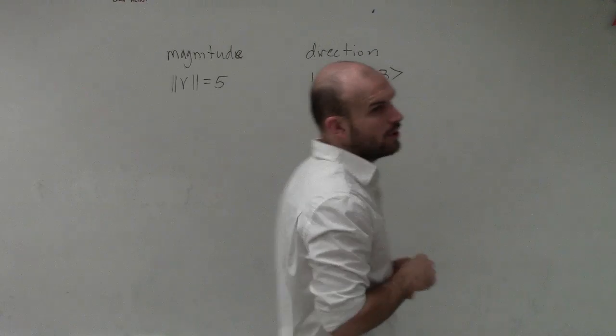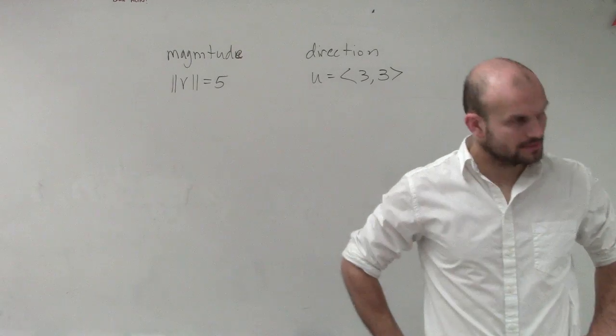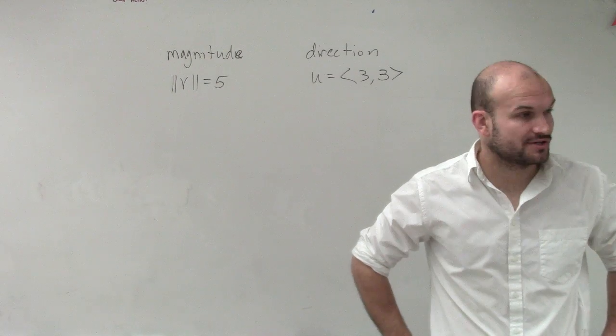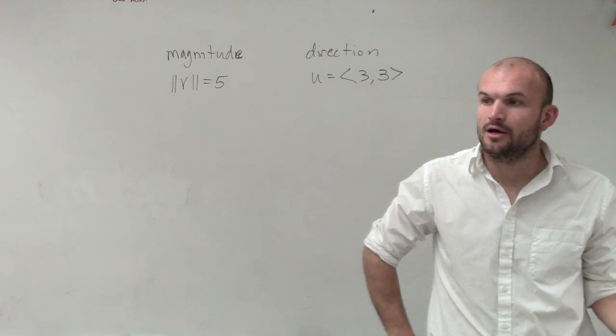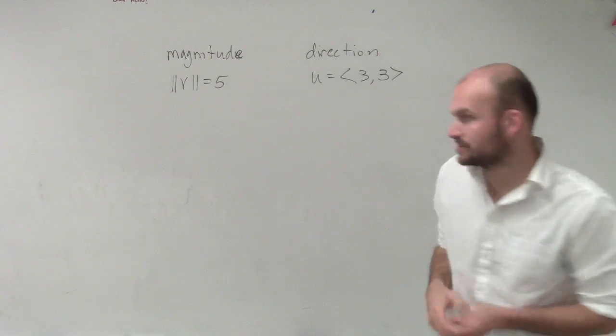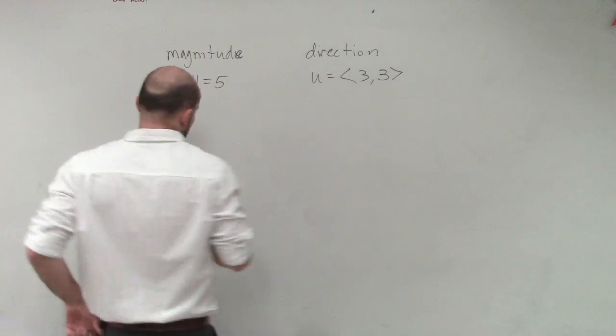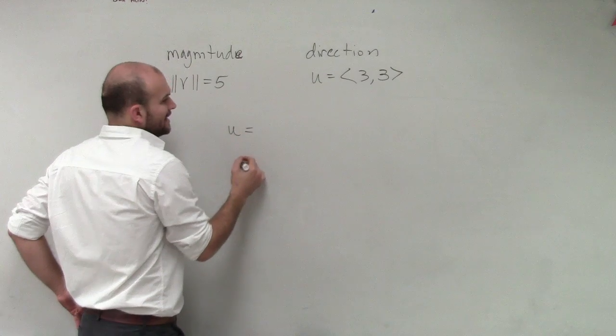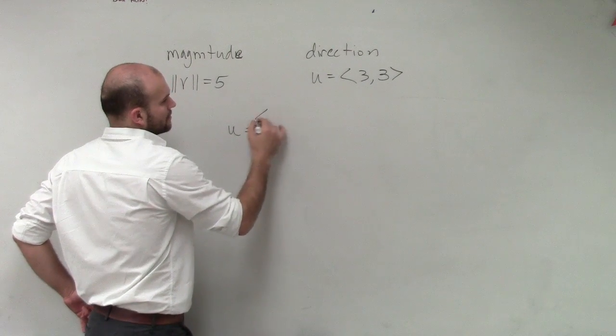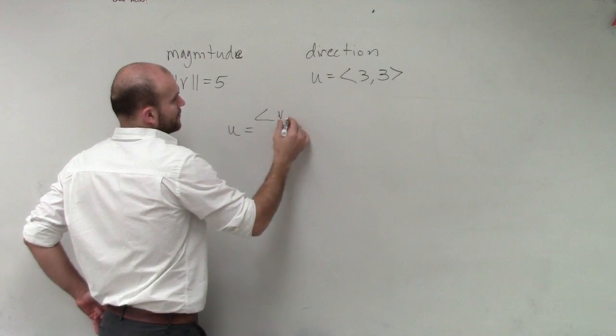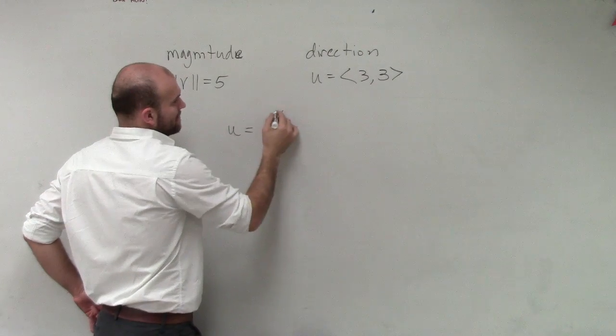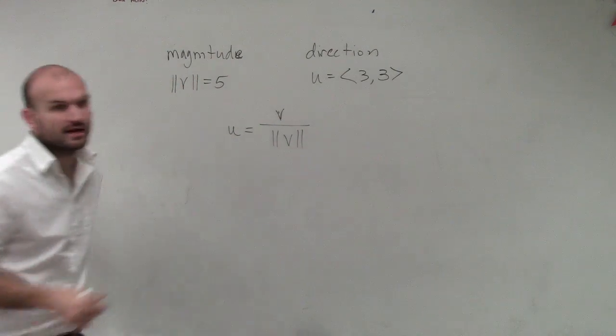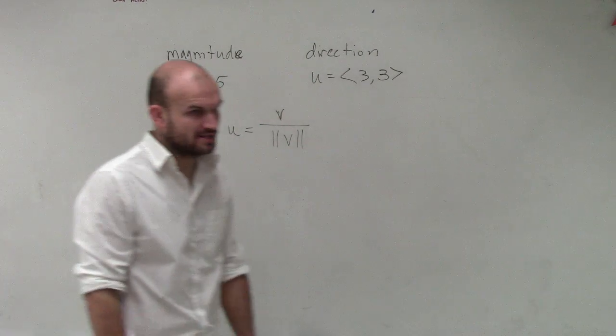So what we've talked about so far is our unit vector, and if we have something multiplied by a unit vector, it has the same direction. Remember our unit vector u equals our vector v over the magnitude of v. This is what a unit vector represents.